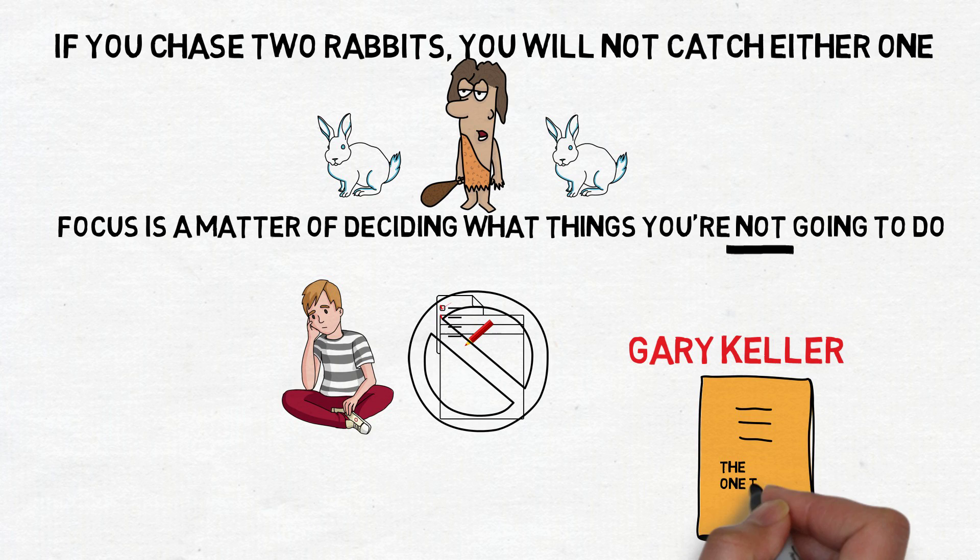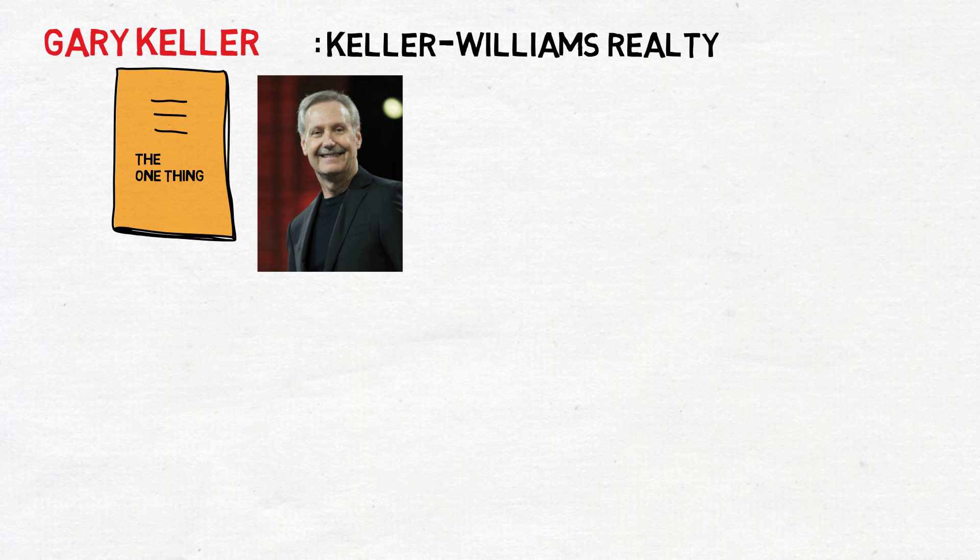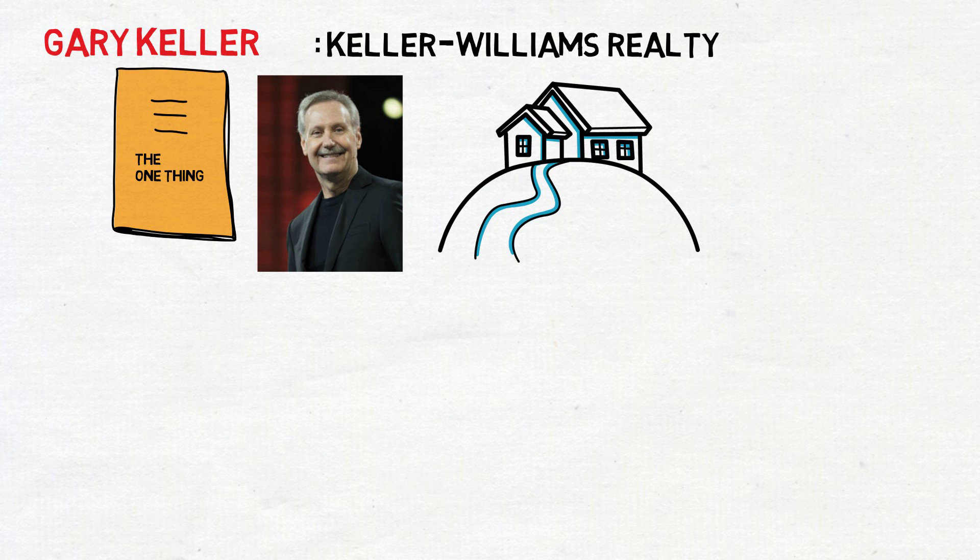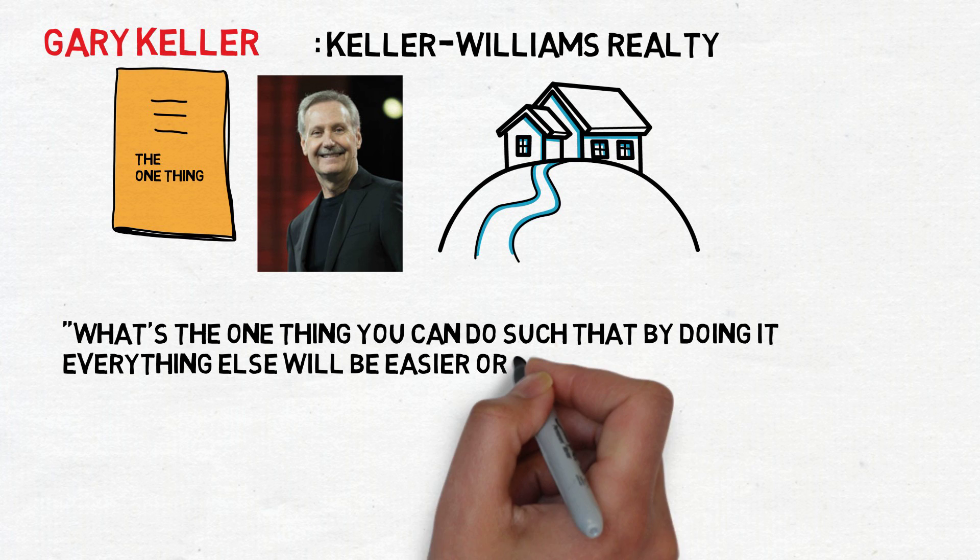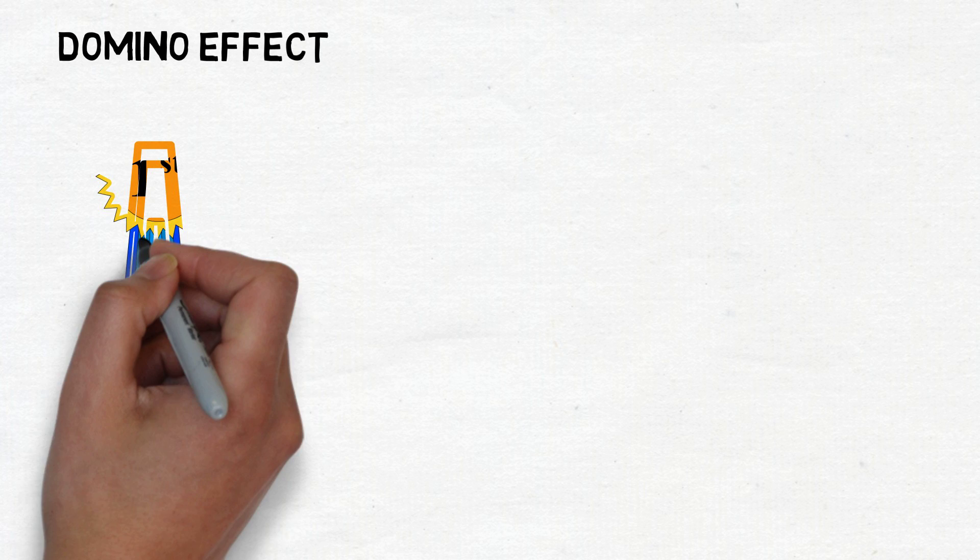In case you're not familiar with him, he is the founder of Keller Williams Real Estate, one of the highest rated real estate companies in the world. Keller wants you to answer the question: what's the one thing you can do such that by doing it, everything else will be easier or unnecessary?